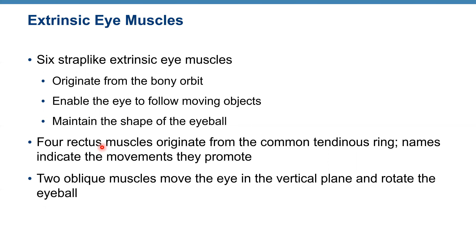We have four rectus muscles — rectus means straight, so the fascicles run straight. All four rectus muscles originate from the common tendinous ring and their names indicate the movements they promote. We also have two oblique muscles and we will see how they move your eye.